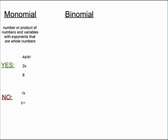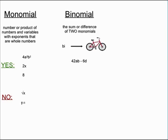A binomial is the sum or difference of two monomials. I remember this - bi means two, like bicycle has two wheels. So basically we're just adding or subtracting two monomials. Let's look at an example because I think examples are the best. 42ab - 6d - those are two monomials we're subtracting, which makes this a binomial.